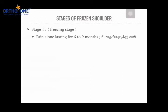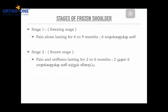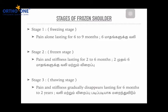Frozen shoulder goes through three stages. Stage one is the freezing stage, lasting six to nine months, where the patient has only pain. If the patient does not respect the pain and continues household activities, the pain increases and this stage can extend beyond nine months. Stage two is the frozen stage, where pain along with stiffness lasts around two to six months. If proper treatment is given at this stage, symptoms can be curtailed early. Stage three is the thawing stage, where pain and stiffness gradually disappear, healing within six months to two years. Intervening between stage one and two gives the best relief.